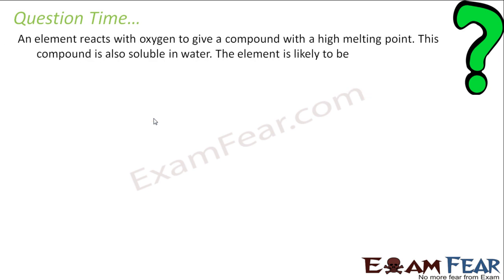Let us take another question. An element reacts with oxygen to give a compound which is a high melting point. This compound is insoluble in water. The element is likely to be calcium, carbon, silicon, iron. So in this case, the answer has to be calcium because calcium when react with oxygen to form a compound which is high melting point. Iron gives rust. Silicon, carbon, we don't know much. Calcium is the one that is the answer.